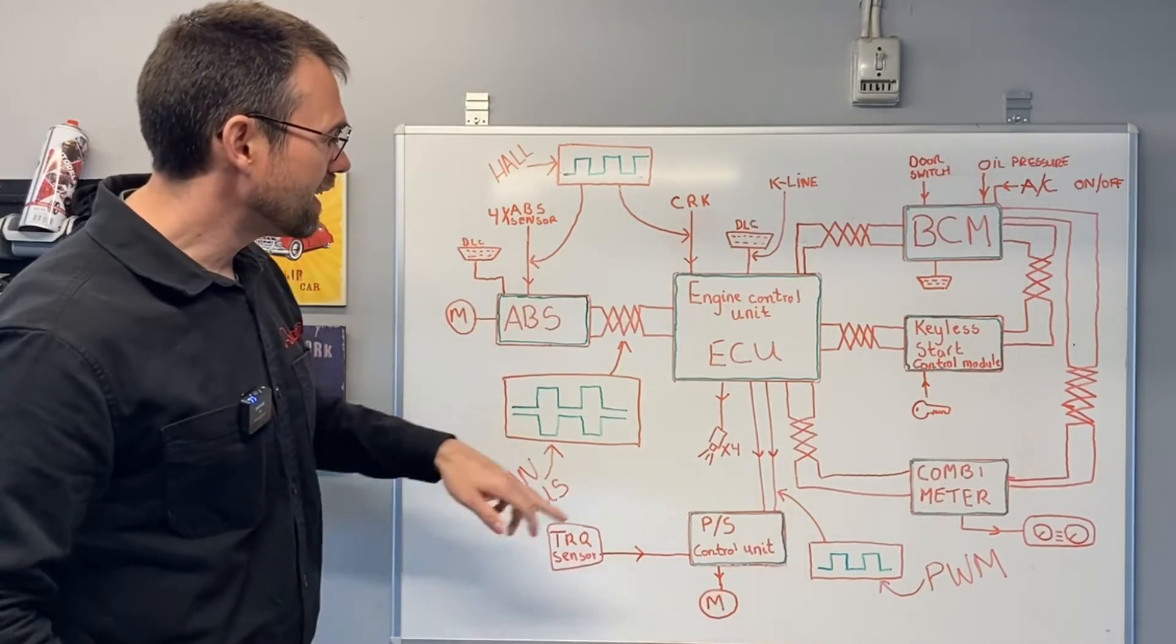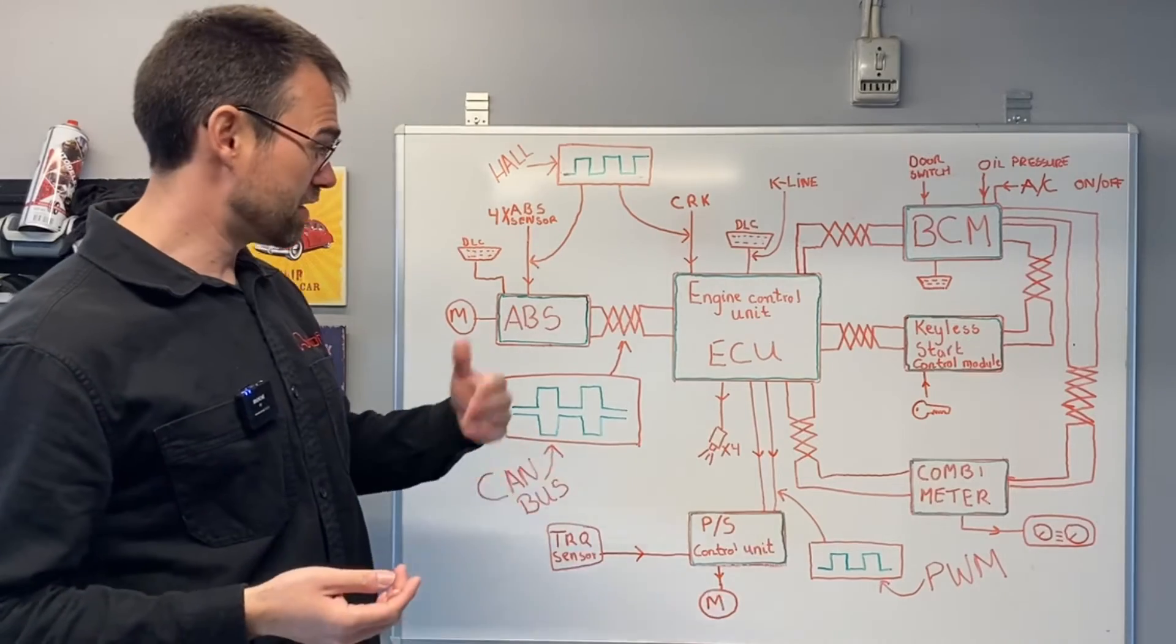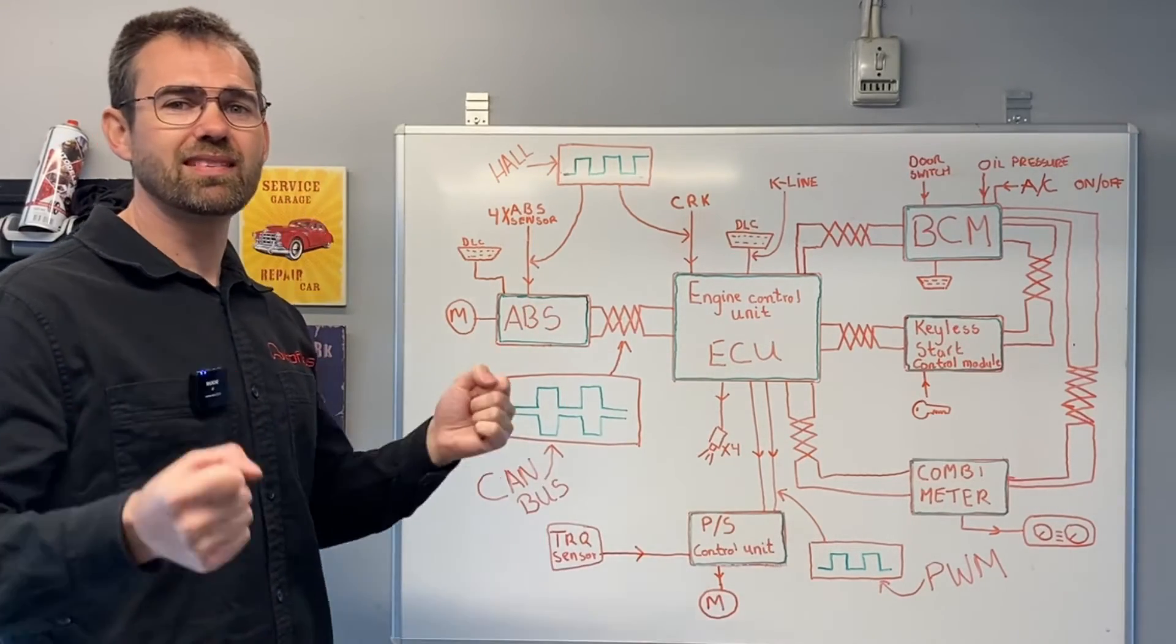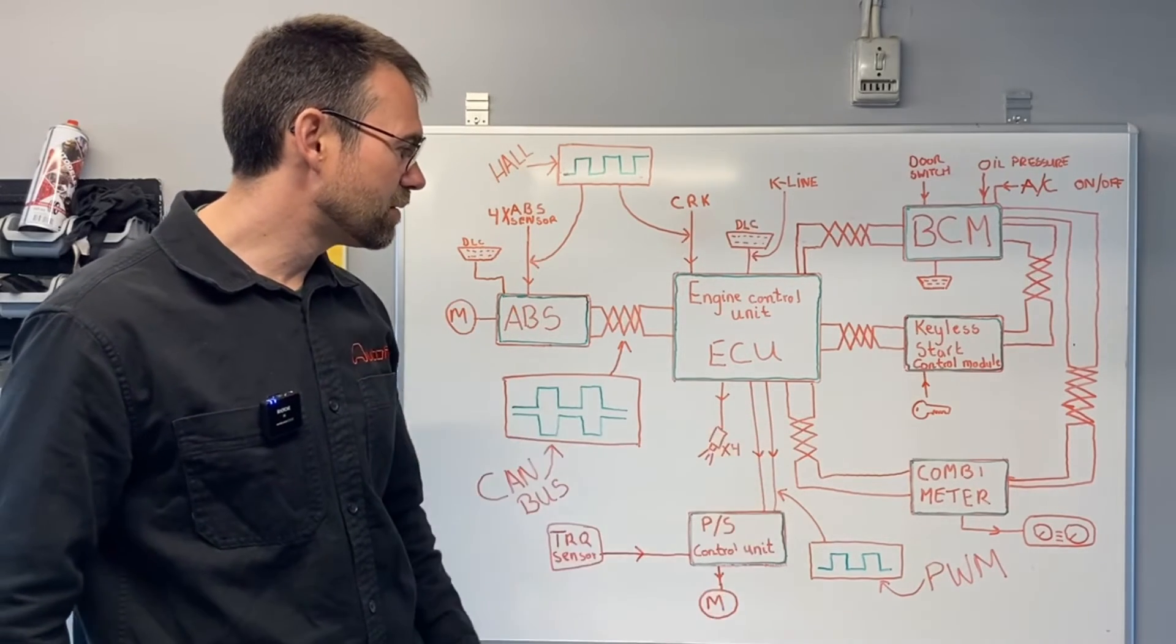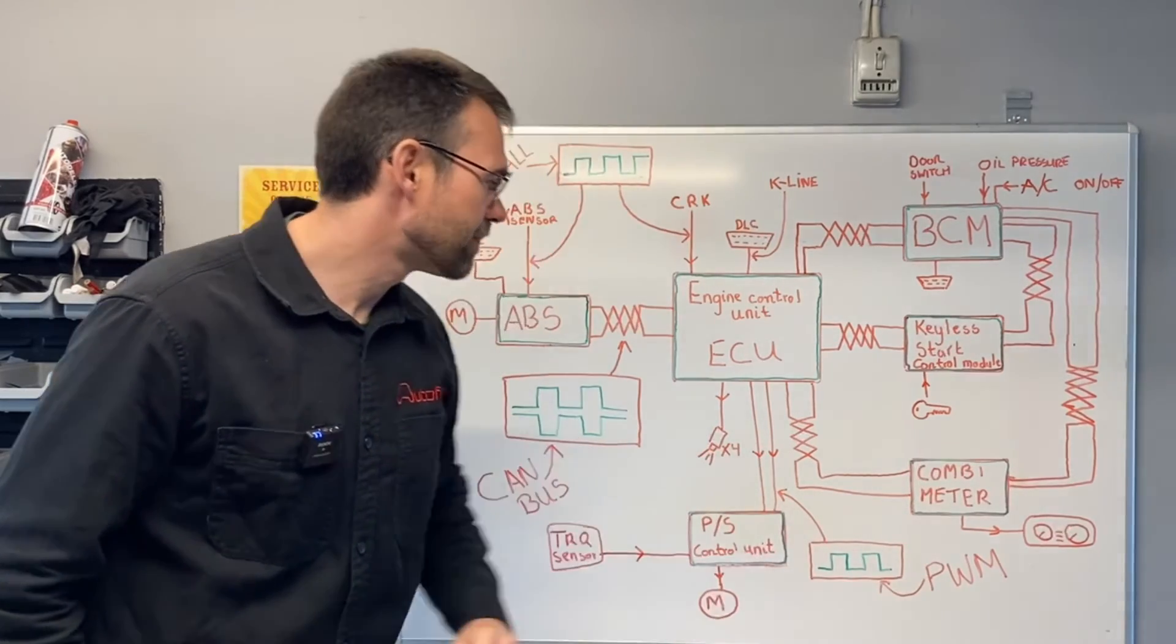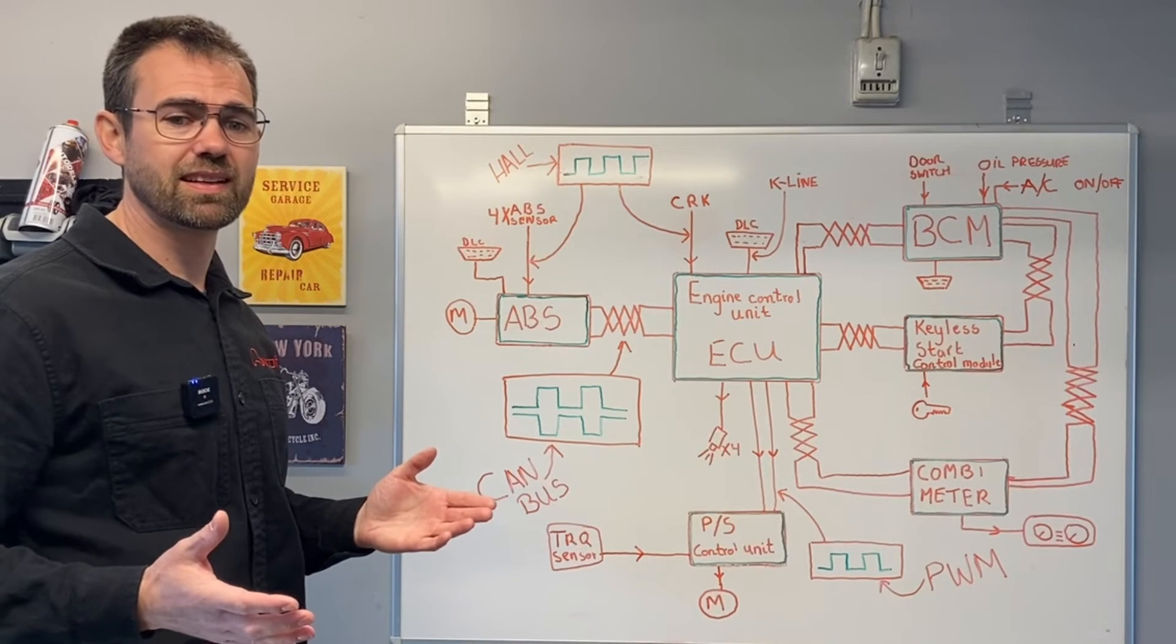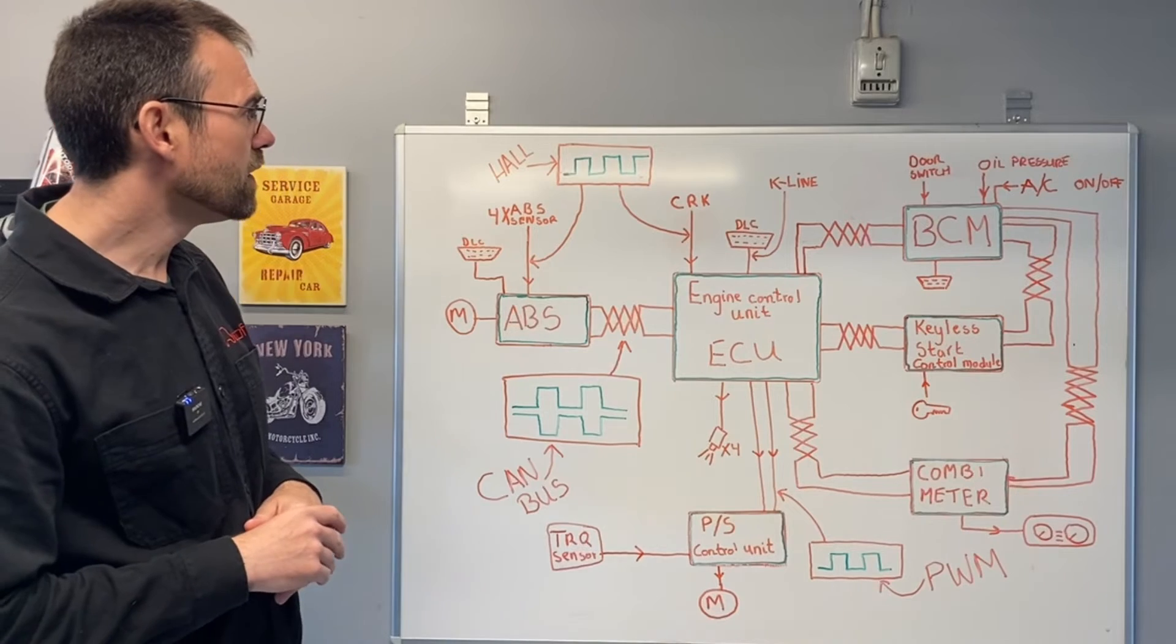The ECU then knows the speed of the car based on that. That exact same vehicle speed signal is transmitted to the power steering control unit so it knows how much assist it needs to make. But the funny thing is that same signal is actually transmitted through a pulse width modulating signal, so that's another signal but basically transmitting the same message.